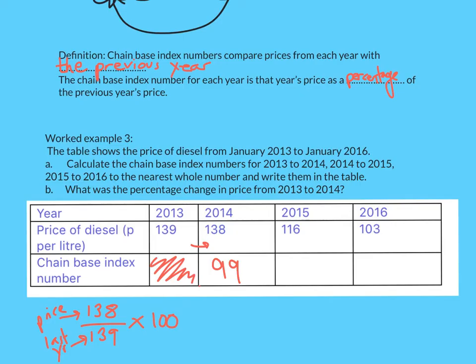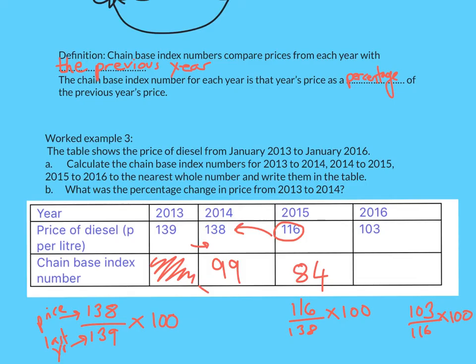For 2015, the new price is 116 divided by last year's price of 138, times 100 — that gives 84. For 2016, it's 103 divided by 2015's price of 116, times 100, which gives around 89.